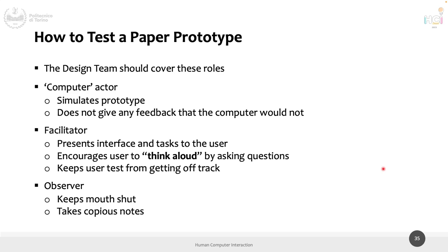Then there is also a third person — the observer — who is silent, watching what the tester is doing and keeping notes. For example, if the task is to start an exercise and the person is not pressing start but pressing something else, the observer notes that the start button was not findable by three out of five people who tested the prototype — so something needs to change to make the interface clearer. These are the three main roles for testing a paper prototype.